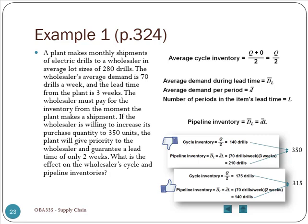Compared to 350, you can see the inventory level overall has decreased. So ordering more in this case, but getting a shorter lead time, is beneficial. They should take this new offer from their supplier to order more but get a shorter lead time.